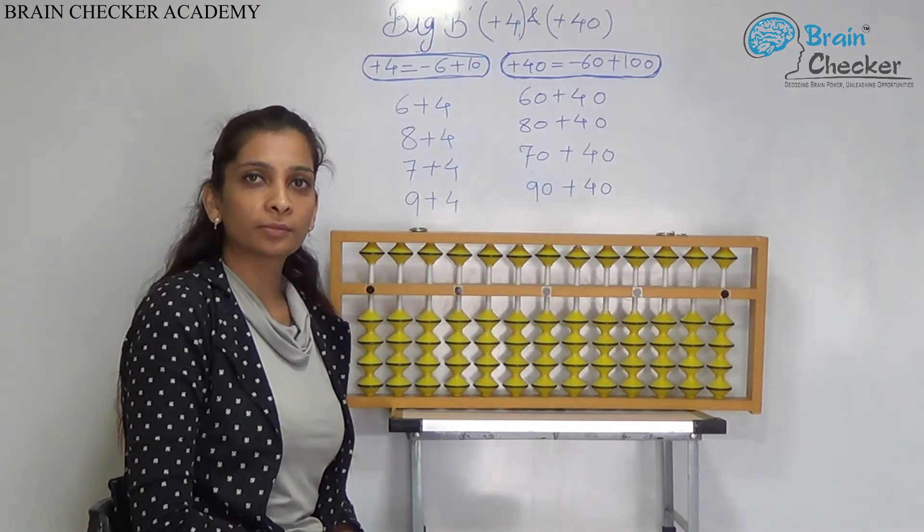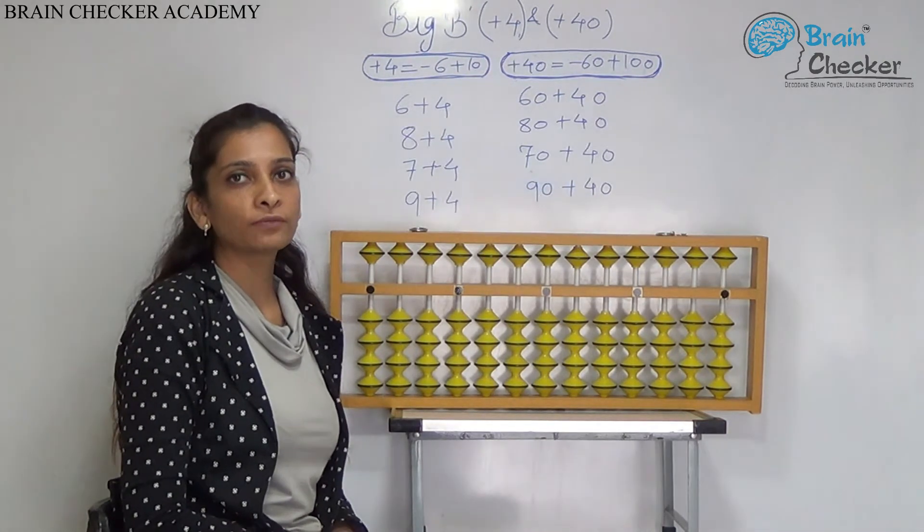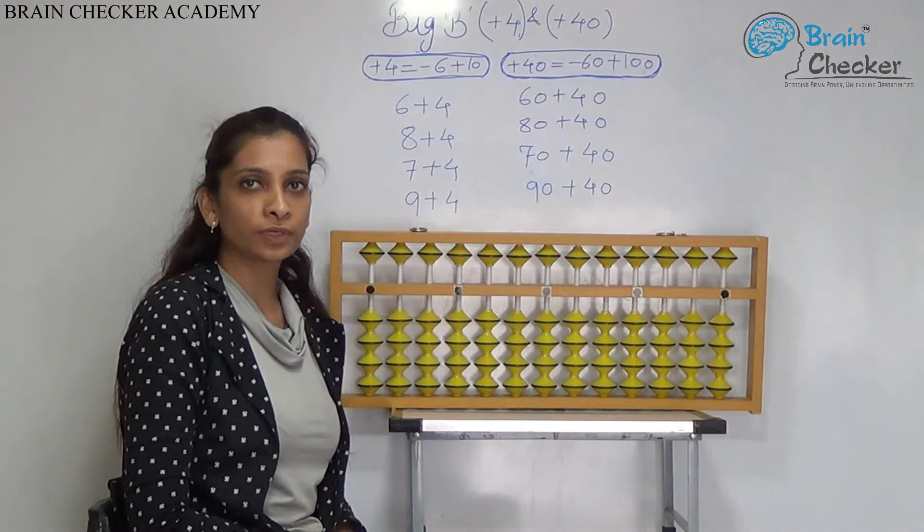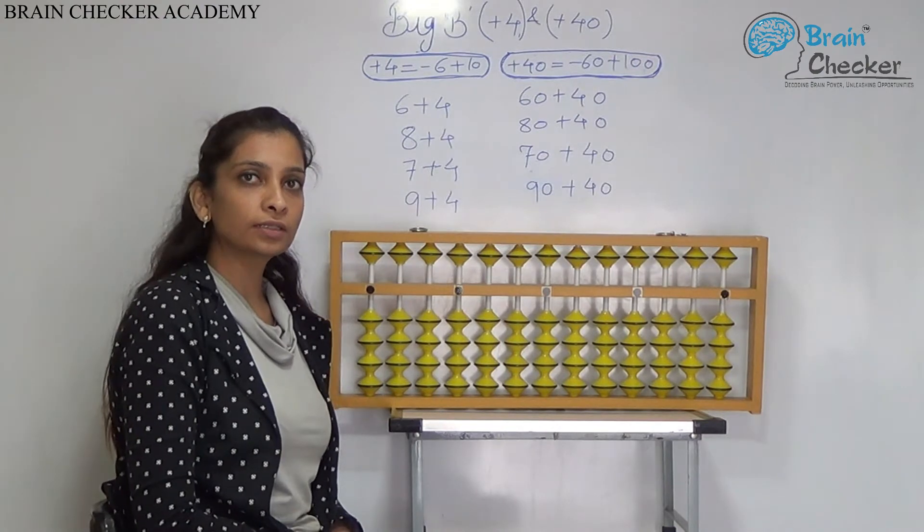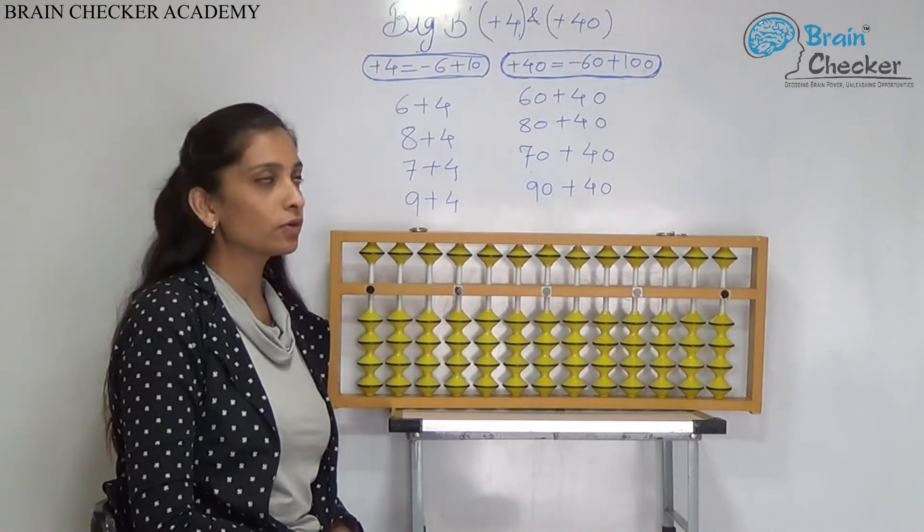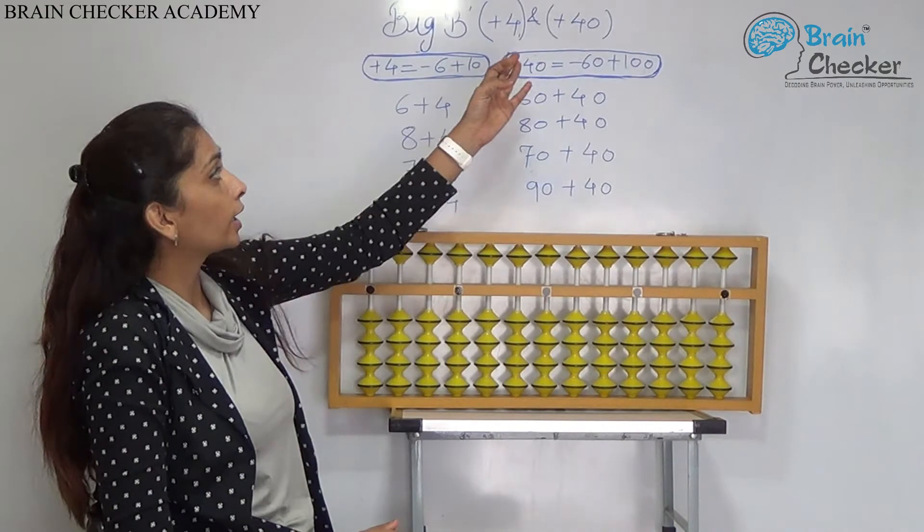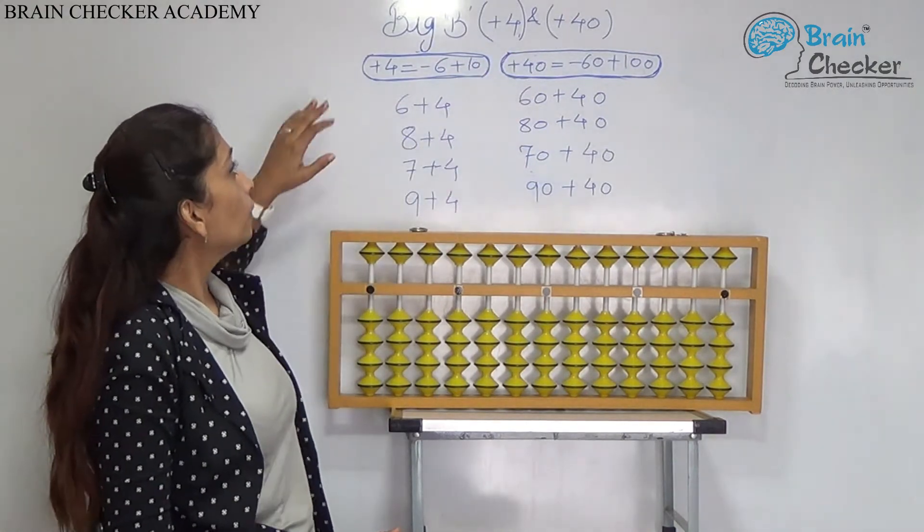Till now, in Brain Checker Academy, we have learned the formula of plus 5 and plus 50. In this session, we will learn the next addition and the next formula for add 4 and add 40.